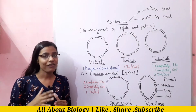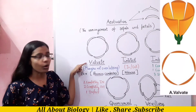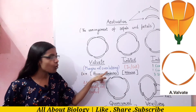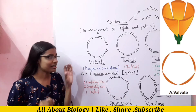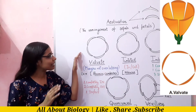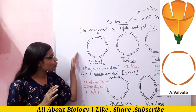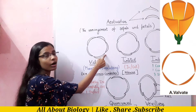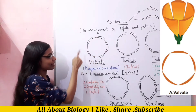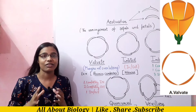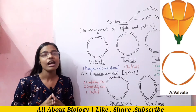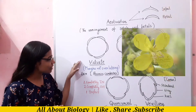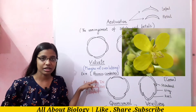Our first type is valvate aestivation. In valvate aestivation, there is no overlapping of the margins. As you can see in this diagram, the petal showing valvate aestivation has margins that are not overlapping in any case. This type of aestivation is seen in Brassica campestris, which is your sarso.